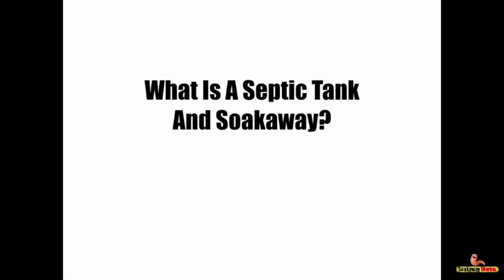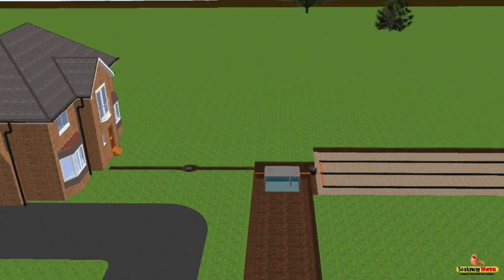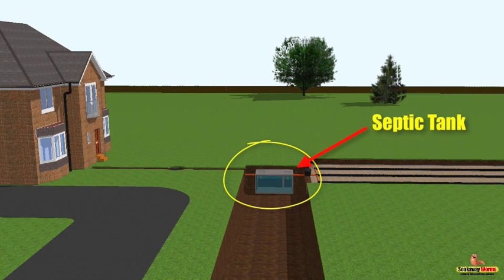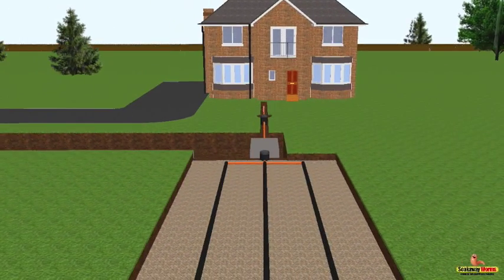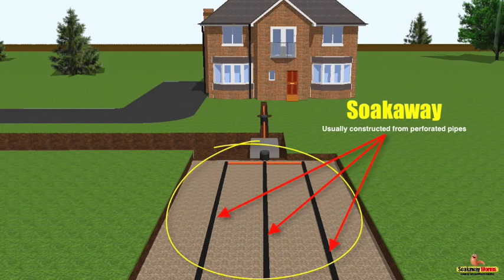So what is a septic tank and soak away? A septic tank and soak away are for properties not connected to mains drainage. A septic tank can be made from concrete, plastic or fibreglass. Soak aways are generally constructed from perforated pipe, gravel or soak away crates.